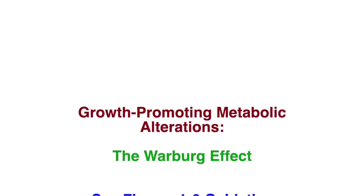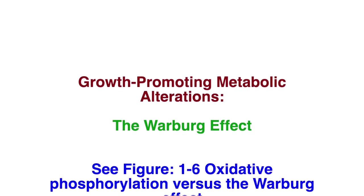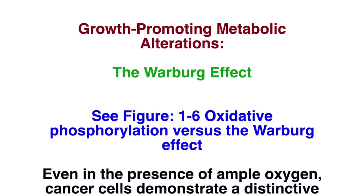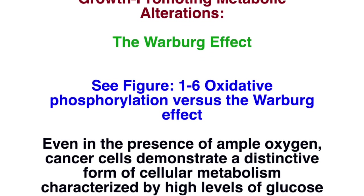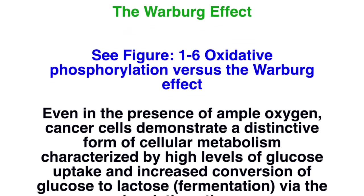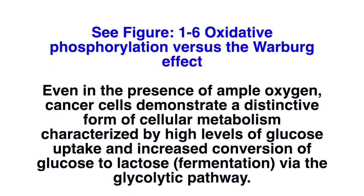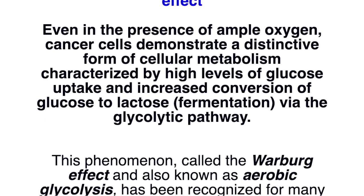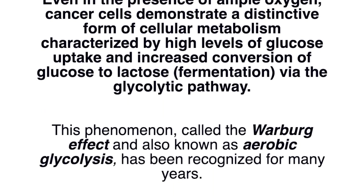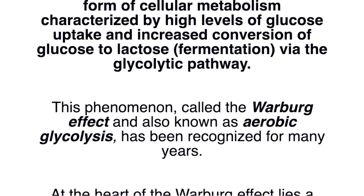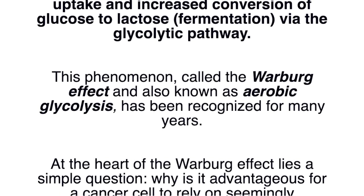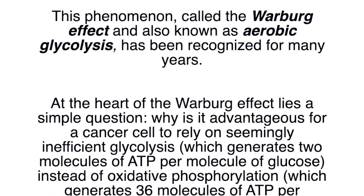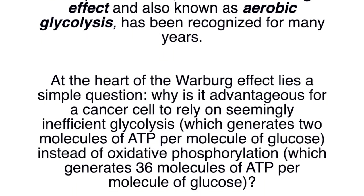Even in the presence of oxygen, cancer cells demonstrate a distinctive form of cellular metabolism characterized by high levels of glucose uptake and increased conversion of glucose to lactate — that is, fermentation — via the glycolytic pathway. This phenomenon, called the Warburg effect or aerobic glycolysis, has been recognized for many years. At the heart of the Warburg effect lies a simple question: why is it advantageous for a cancer cell to rely on seemingly inefficient glycolysis, which generates 2 molecules of ATP per molecule of glucose, instead of oxidative phosphorylation, which generates 36 molecules of ATP per molecule of glucose?